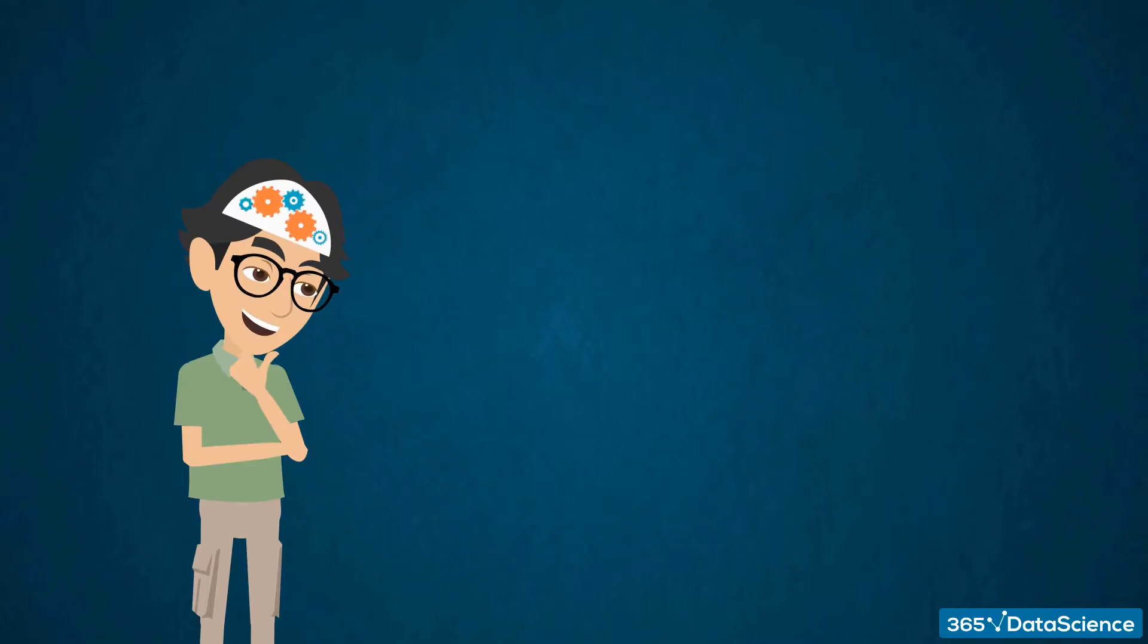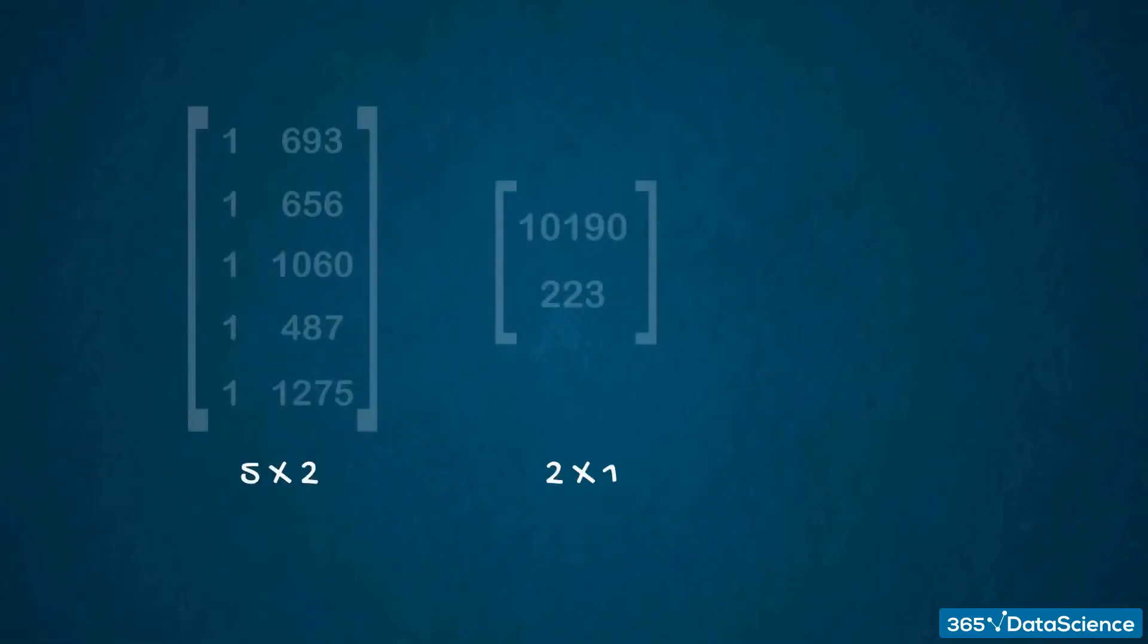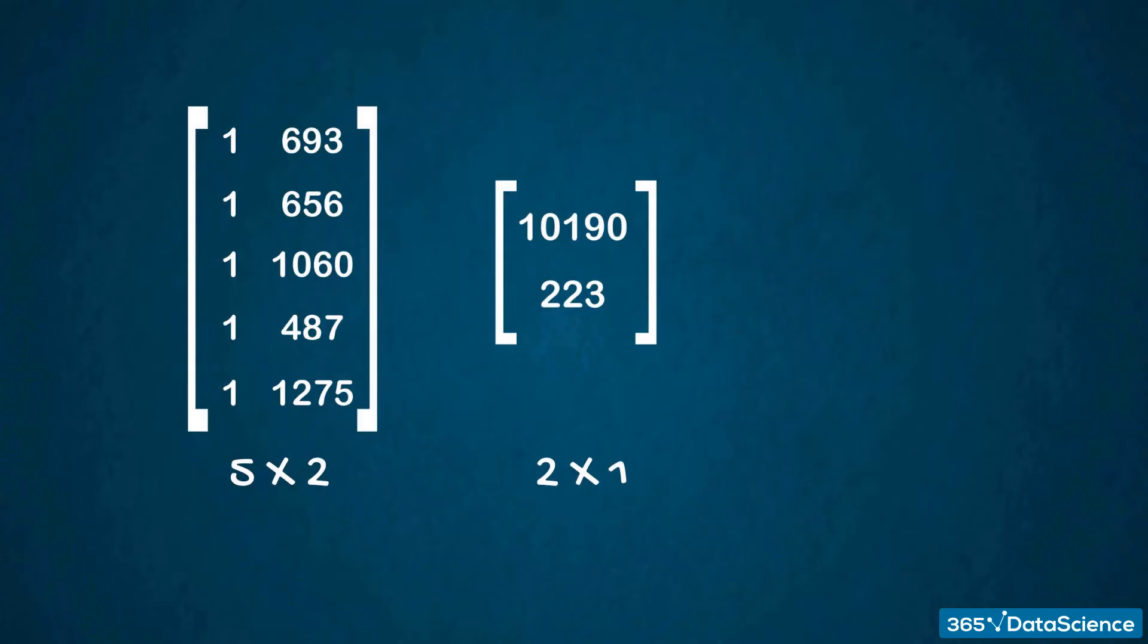Let's explore these two objects: a 5×2 matrix and a vector of length 2. The matrix contains a column of ones and another with the sizes of the houses. The vector contains 10,190 and 223, the numbers from the equation. If we go about multiplying them, we will get a vector of length 5. The first element will be equal to 1 times 10,190 plus 693 times 223.